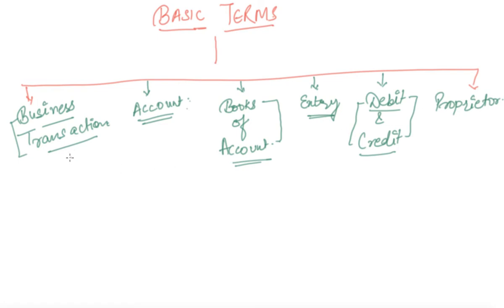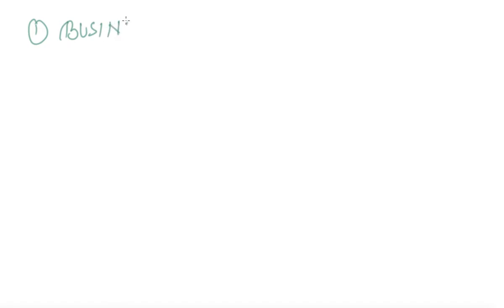In basic terms, we will learn about these six terms one by one. So our first term is business transactions.